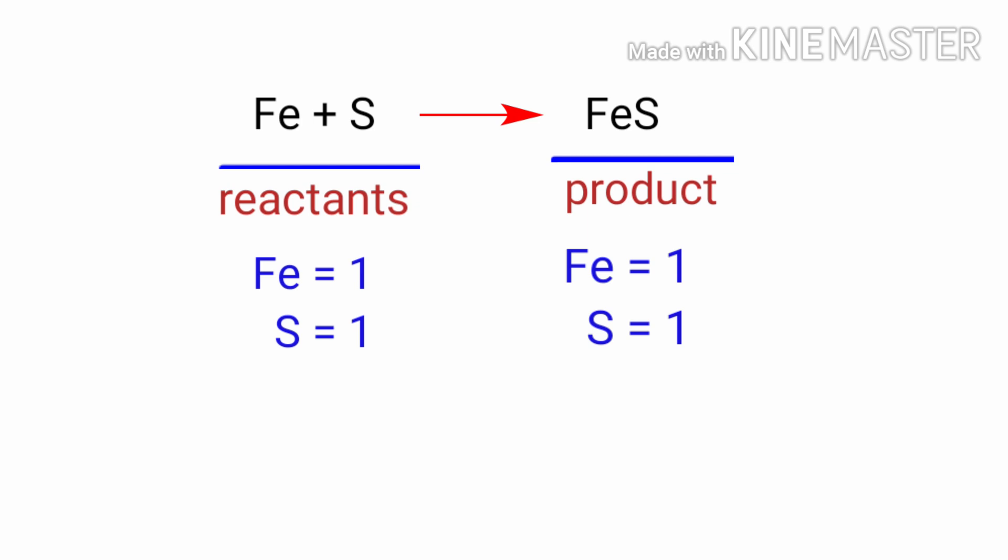There is one iron atom and one sulphur atom on both sides. So we don't need to balance this equation because it is already balanced.